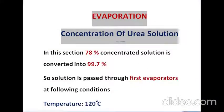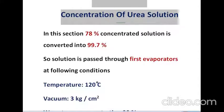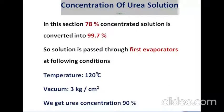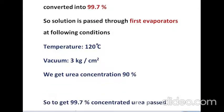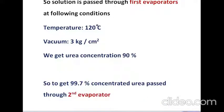In the evaporation step, urea solution concentration increases from 78 percent to 99.7 percent using two evaporators. The first evaporator operates at 120 degrees centigrade and vacuum of 3 kg per centimeter square, achieving 90 percent concentration. A second evaporator then increases the concentration from 90 percent to 99.7 percent.